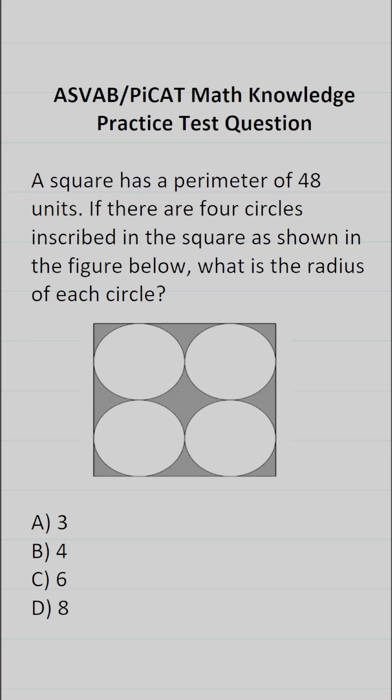This math knowledge practice test question for the ASVAB and PyCat says, a square has a perimeter of 48 units. If there are four circles inscribed in the square as shown in the figure below, what is the radius of each circle?